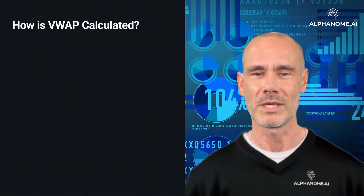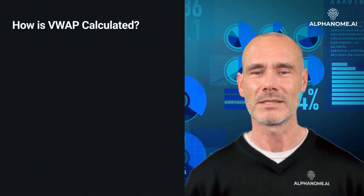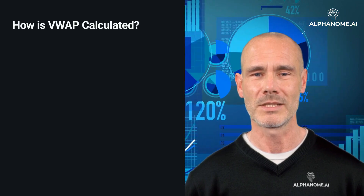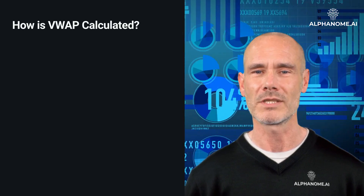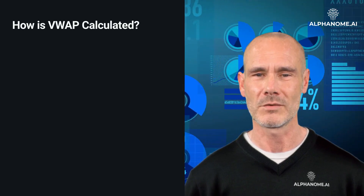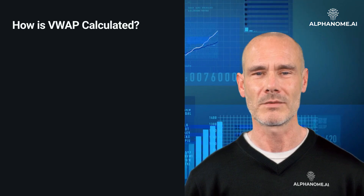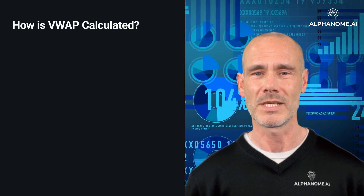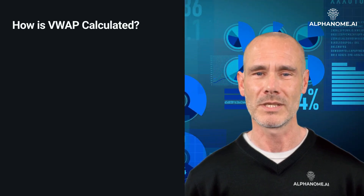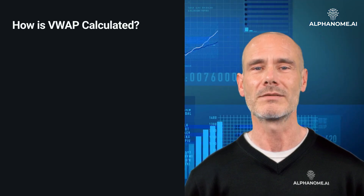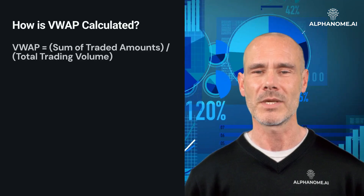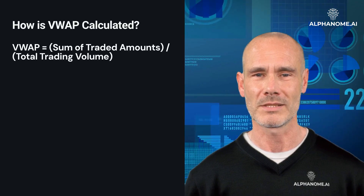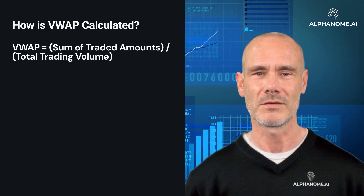How is VWAP calculated? The VWAP is calculated by taking the sum of all traded amounts for a security — price multiplied by volume — and dividing it by the total trading volume for the specified time period. The formula is: VWAP equals sum of traded amounts divided by total trading volume.